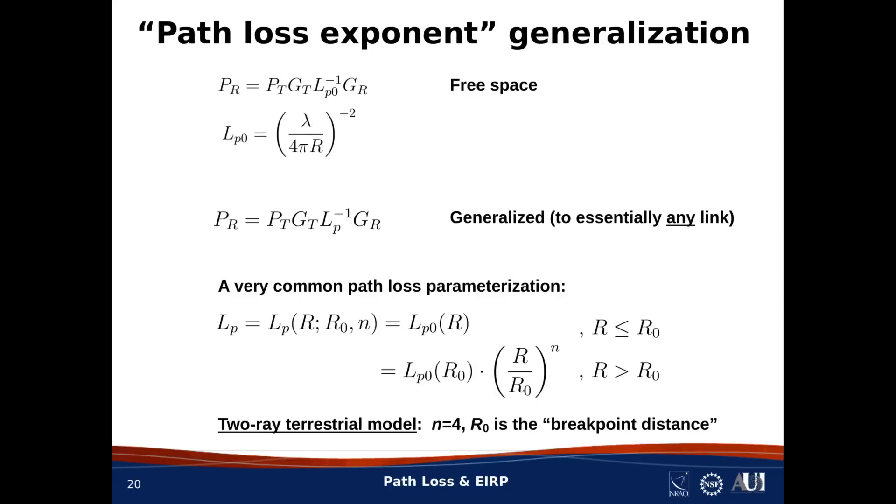In this scheme, if you choose N equals 2, then again, nothing has changed. You still have the free space model. If, on the other hand, you choose N equals 4, then you now have the famous two-ray terrestrial path loss model. If you have not heard of this model, check out another lesson that I did on this topic. The title of that lesson is Propagation over Flat Earth.